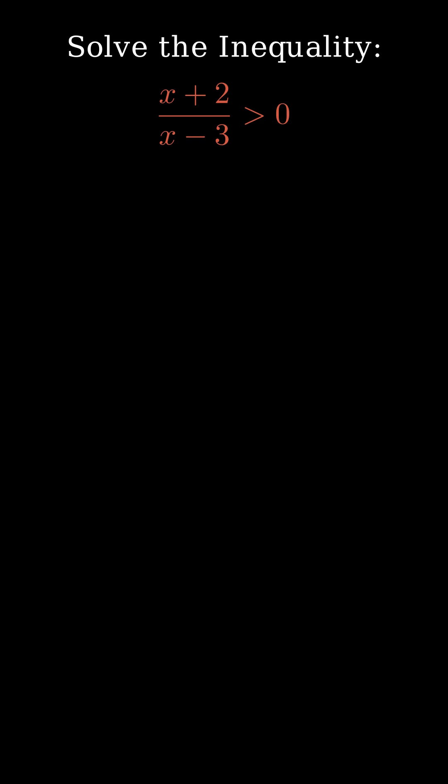We are given a rational inequality: x plus 2 over x minus 3 is greater than 0. To solve this, we first find critical points by setting the numerator and denominator equal to 0.